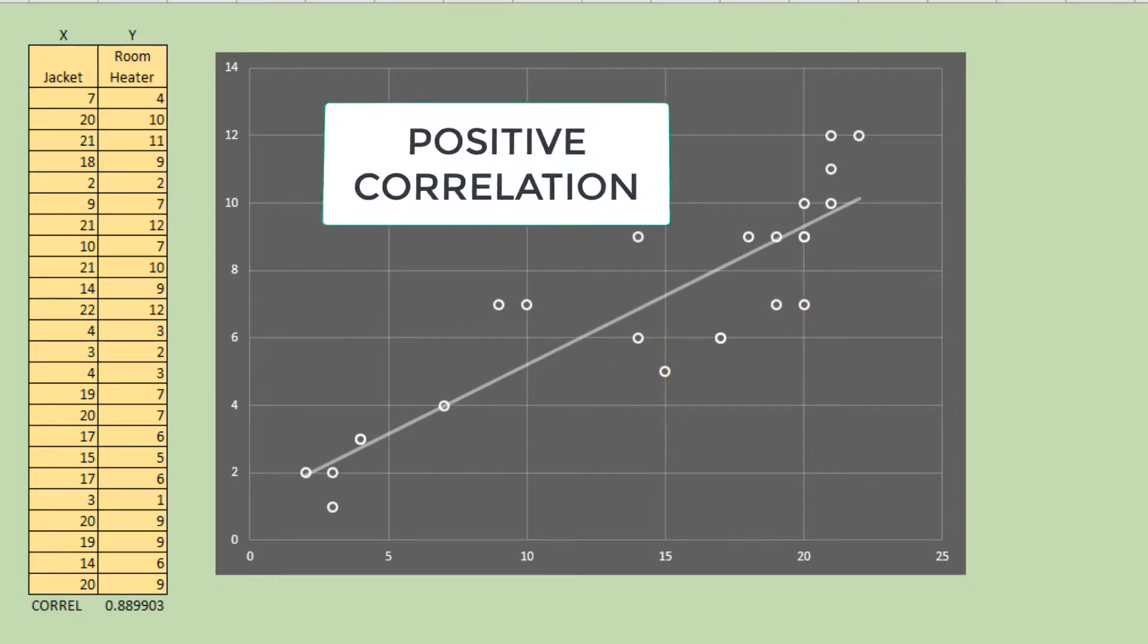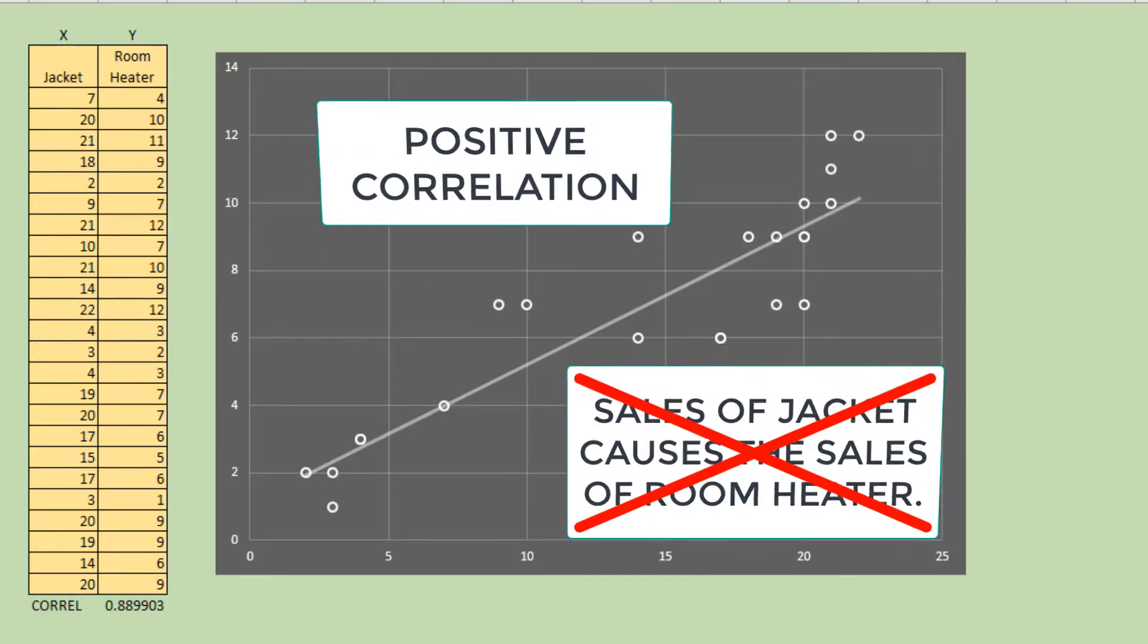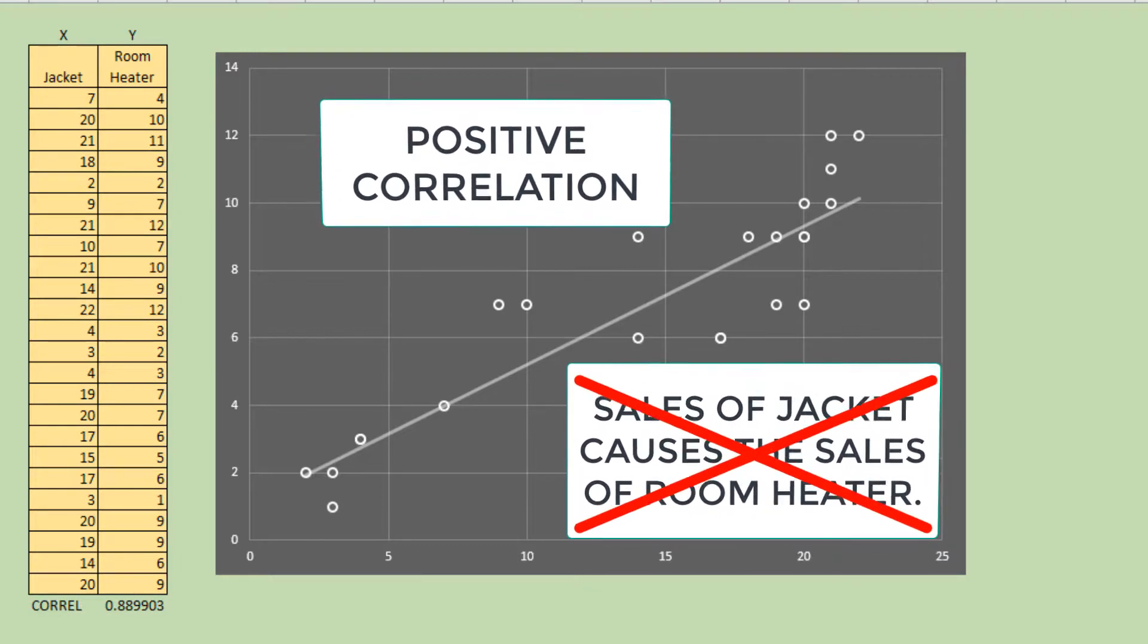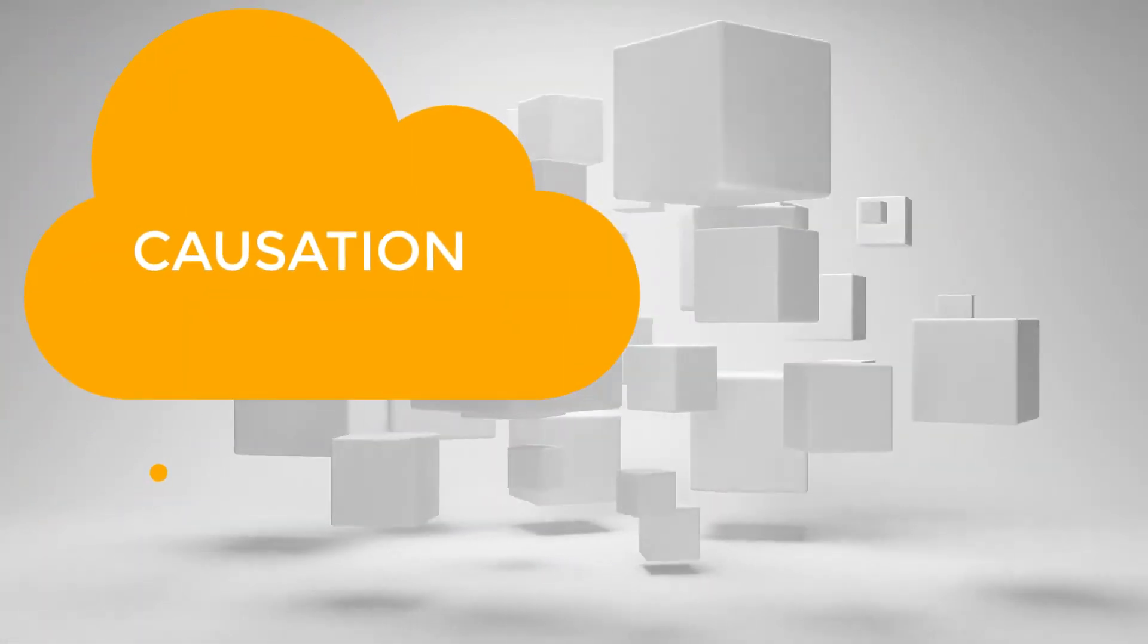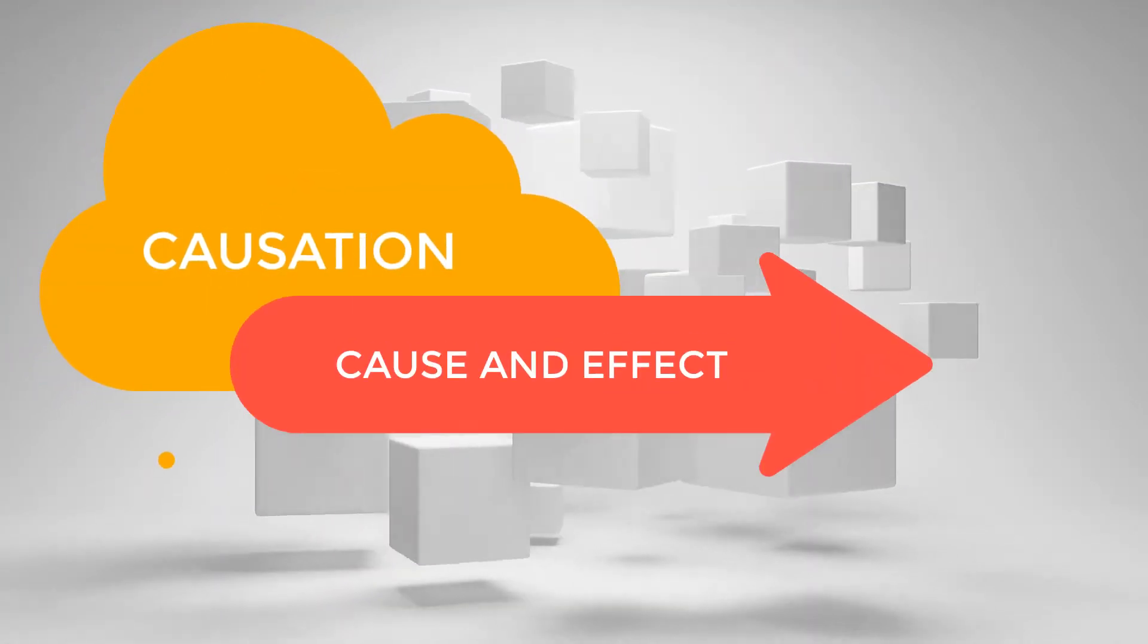While the data shows that they have positive correlation, it does not necessarily mean that the increase in sales of jacket causes the increase in sales of room heater. Causation is more than just correlation. It indicates cause and effect situation.